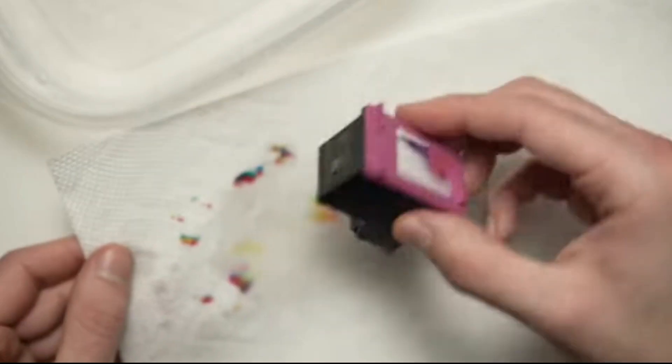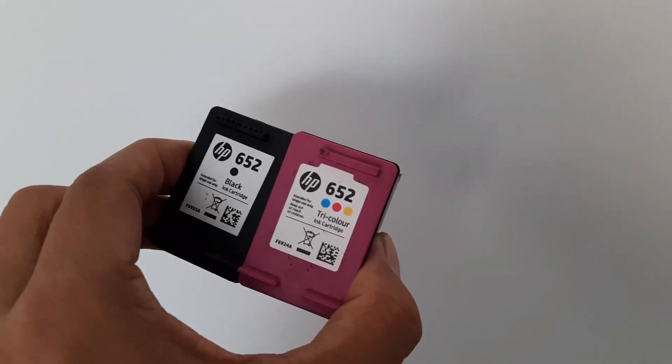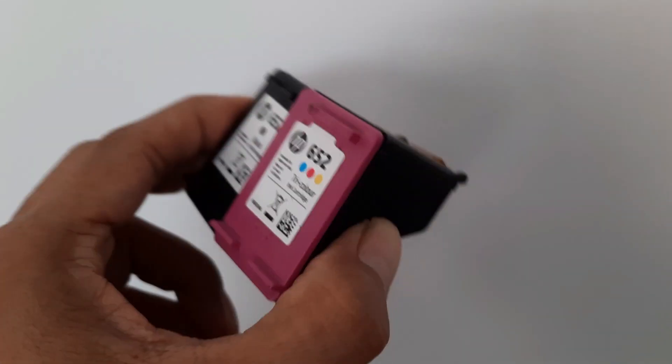Step 8: Select settings and maintenance clean print cartridge in the HP printer manager window. The printer runs a test sequence, cleans the ink cartridges and prints a test page when finished.